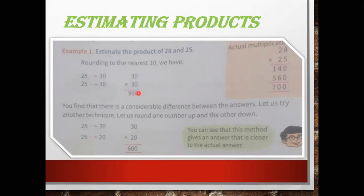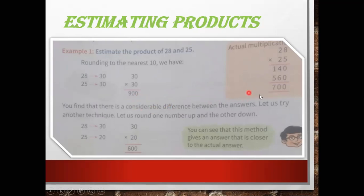When you multiply 30 × 30 we get 900. But let's see what we get if we multiply the original numbers: 28 × 25 = 700. So we got 900 as the estimate but the actual answer is 700 — there is a lot of variance between these two answers, so they are not close enough.